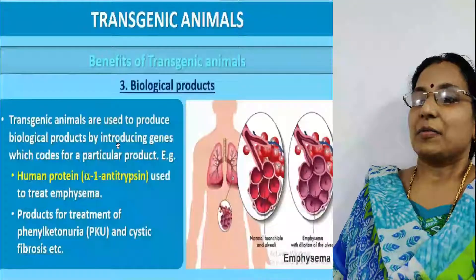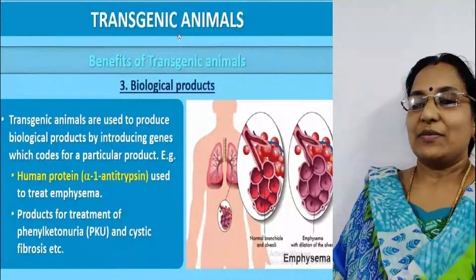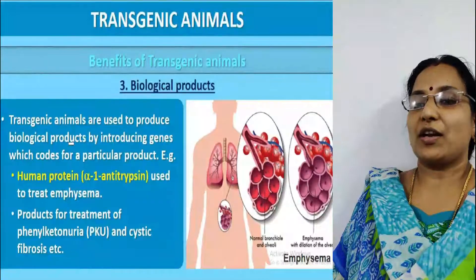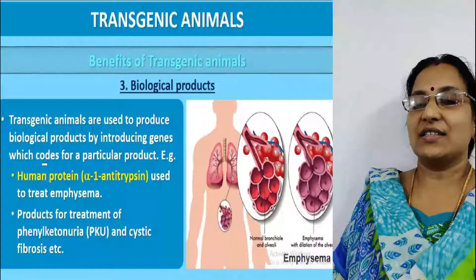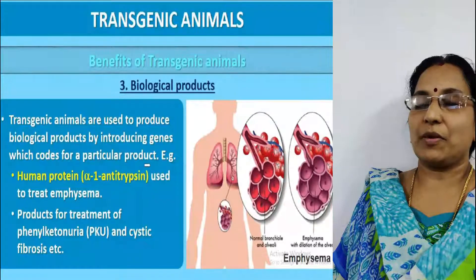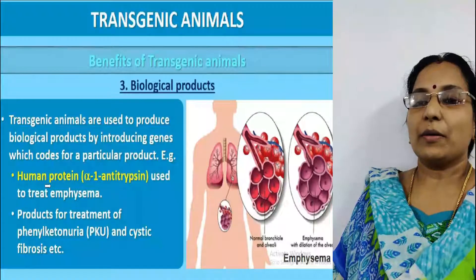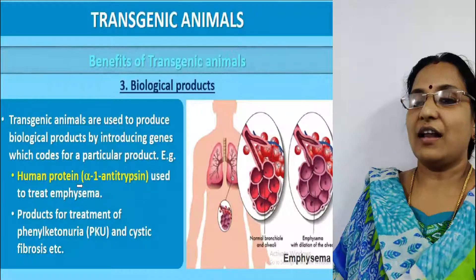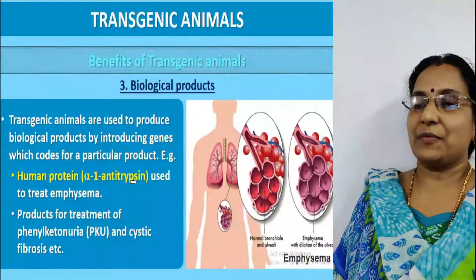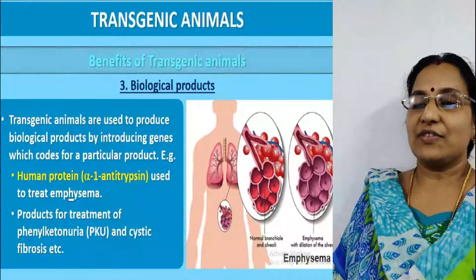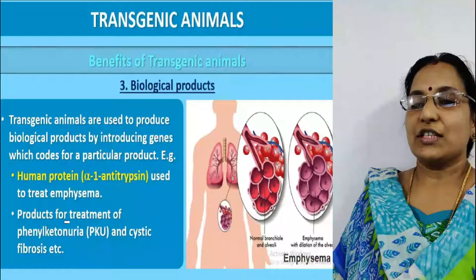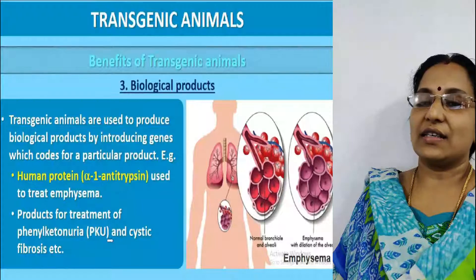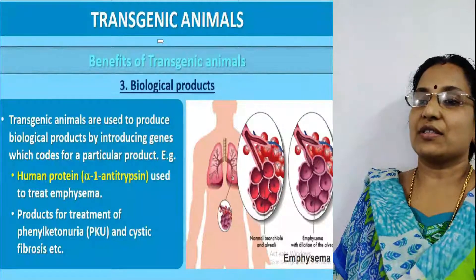The third benefit is biological products. Transgenic animals are used to produce biological products by introducing genes which code for a particular product. For example, human proteins like alpha-1-antitrypsin, used to treat emphysema, and products for treatment of phenylketonuria (PKU) and cystic fibrosis.